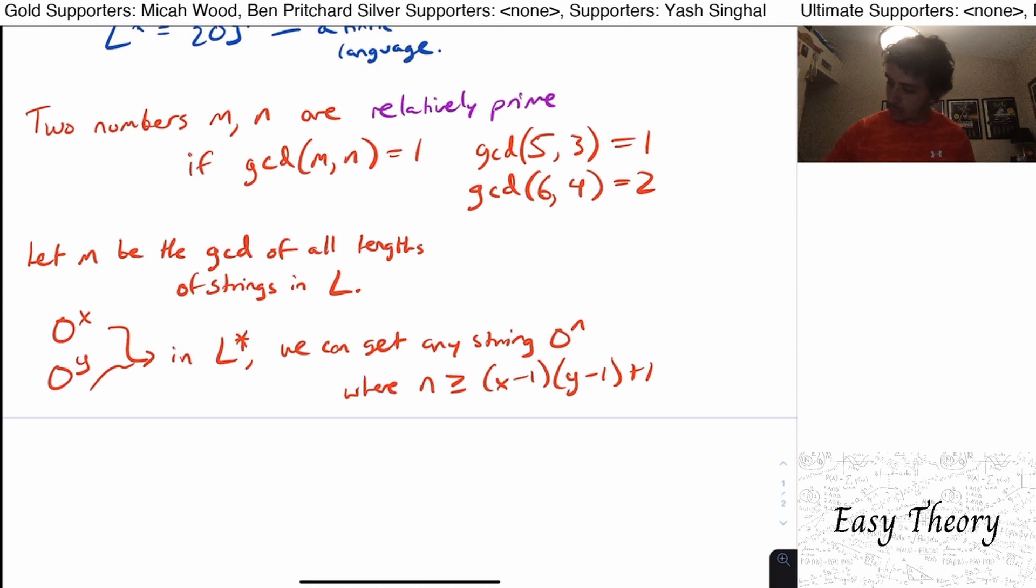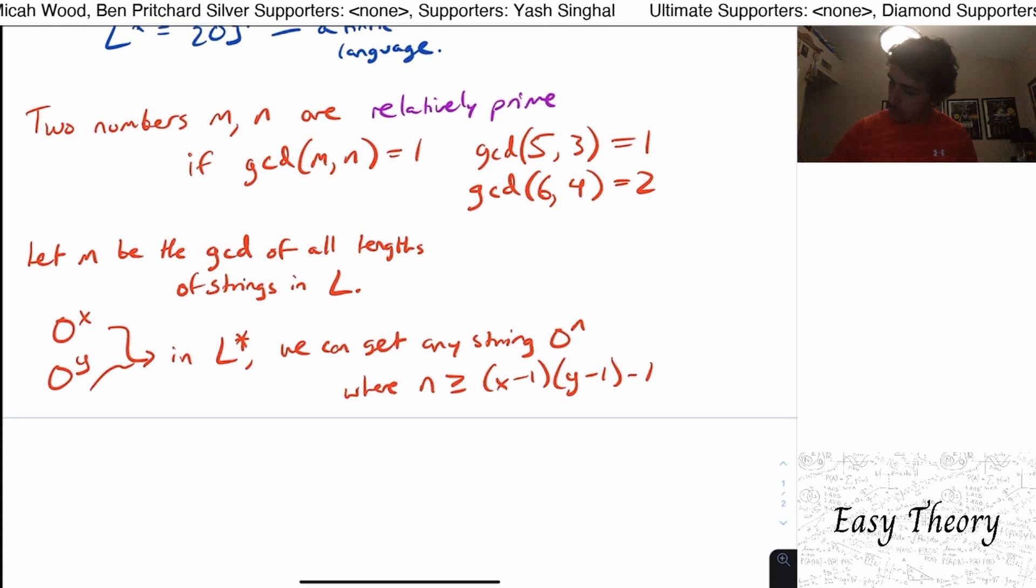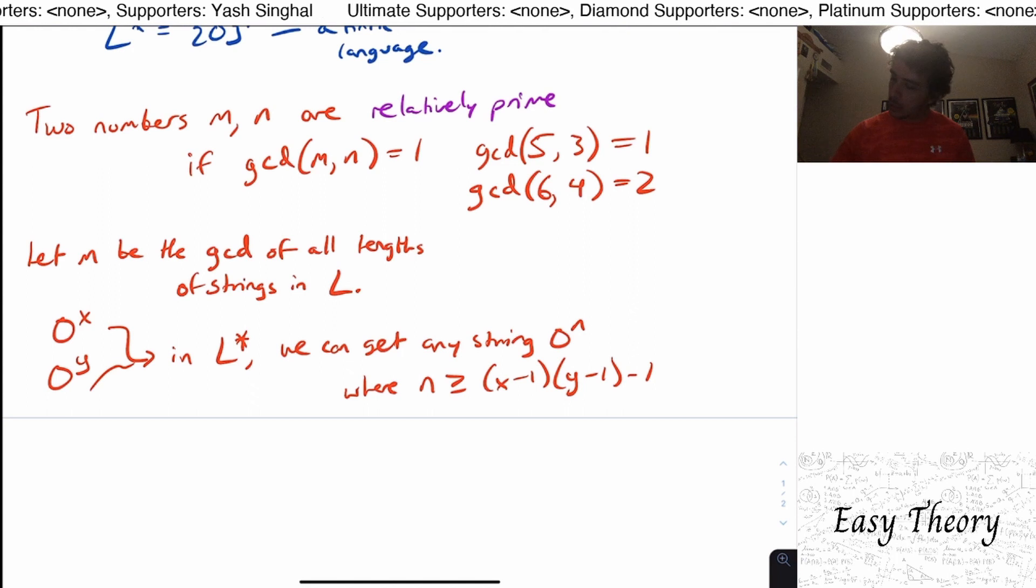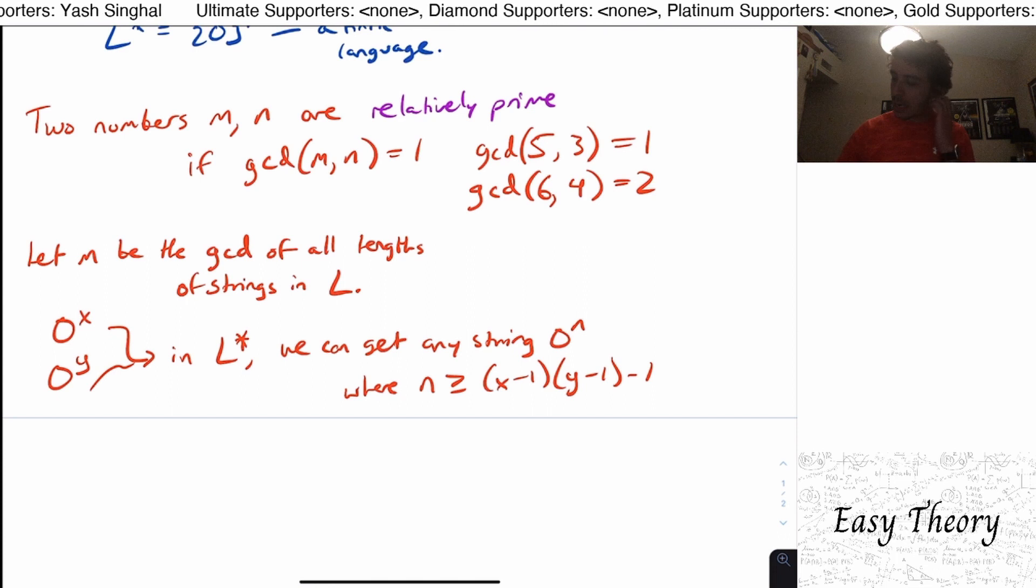The number itself isn't really that important. The important thing is that these two numbers are finite. So this N right here is finite. So this means that if we have these two strings right here, then we can get any string of length N at least some finite number.